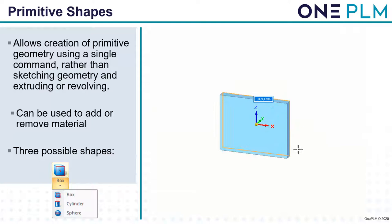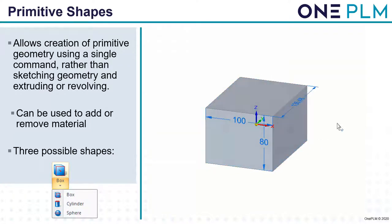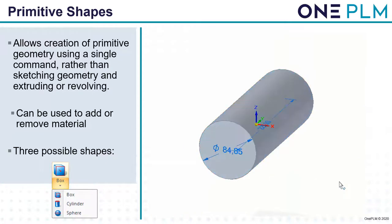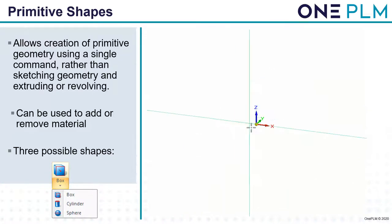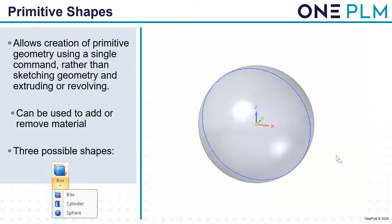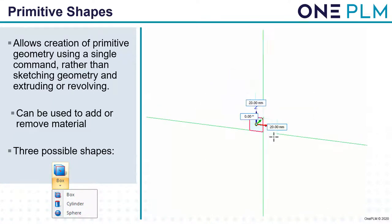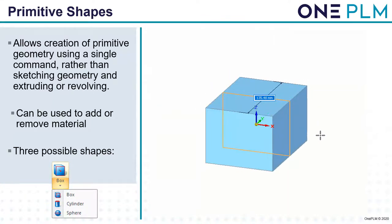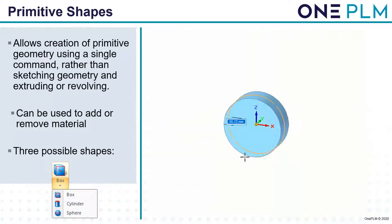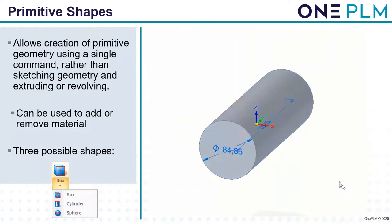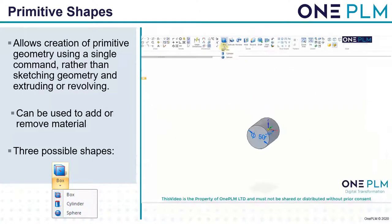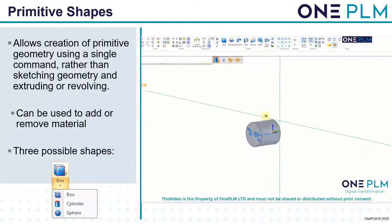Next we'll look at some other basic shape creations. We have a tool called primitive shapes that allows us to create three possible shapes: a box, a cylinder, and a sphere. While creating these we can use the spacebar to add or remove, and when we create that initial one we are always going to be creating solid geometry.